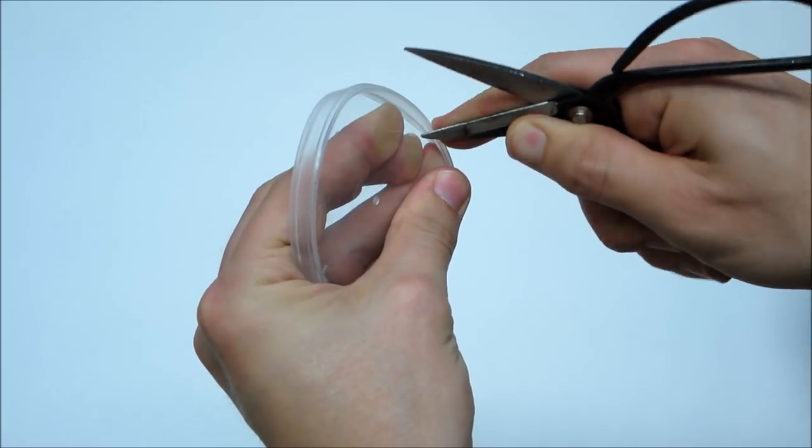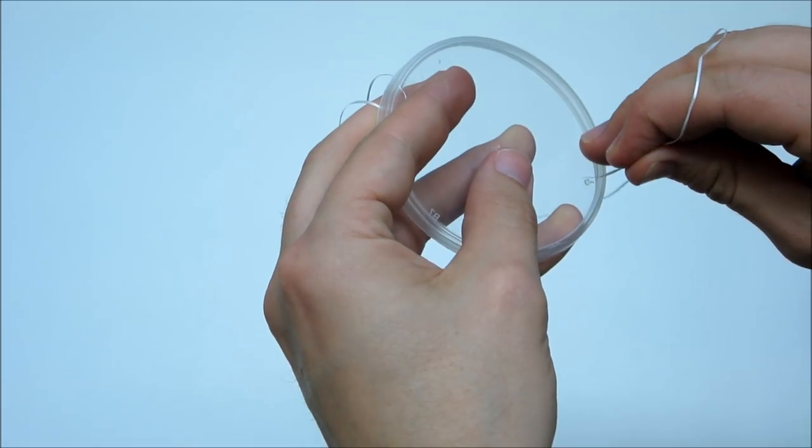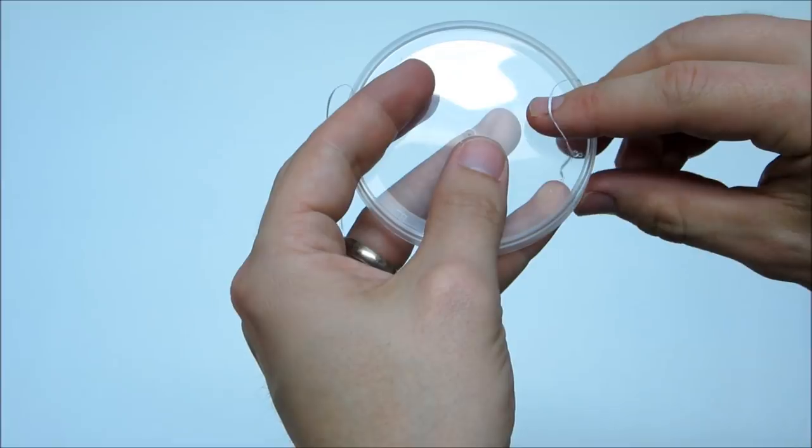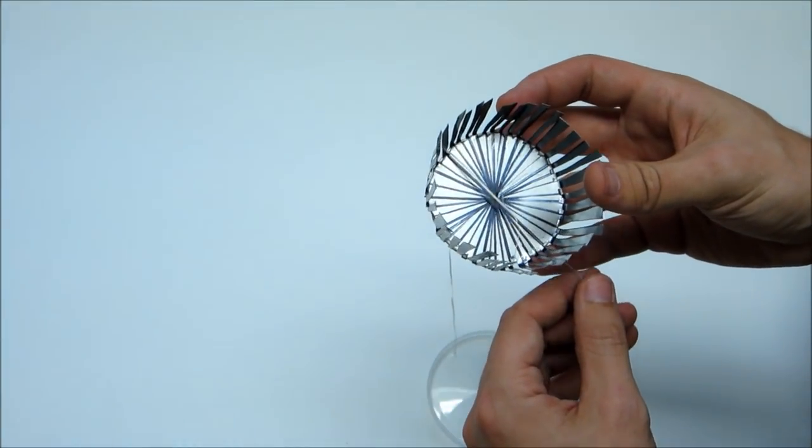Using the ends of the tin snips or another sharp object, punch two small holes on opposite sides of the plastic lid. Then cut off a 2 foot piece of floss and thread the floss through these holes. Tie the ends together and feed the loop through the teeth of the metal platform.